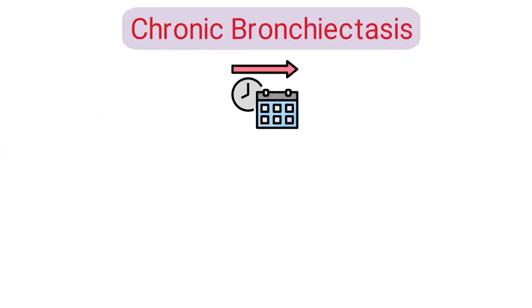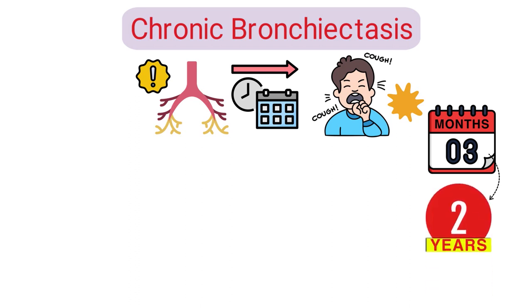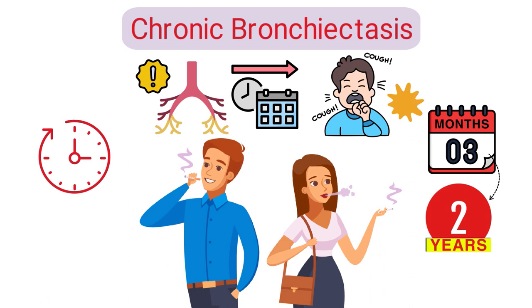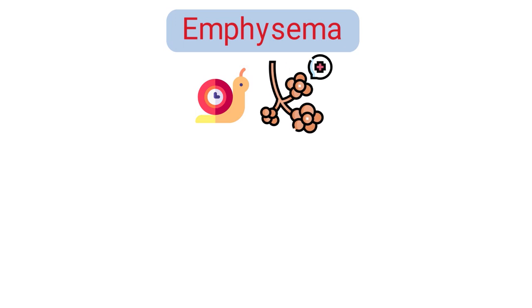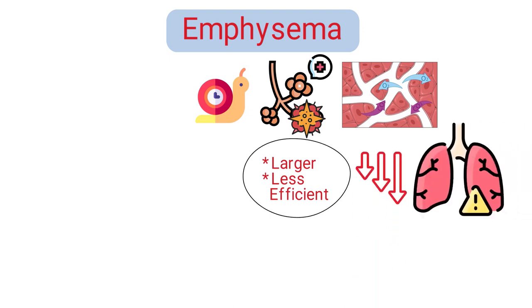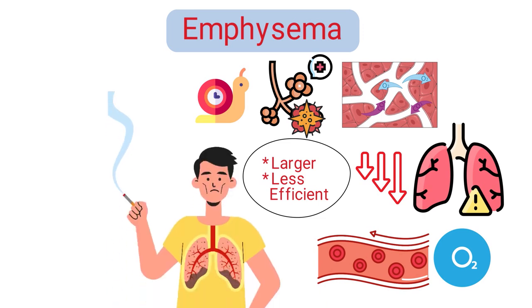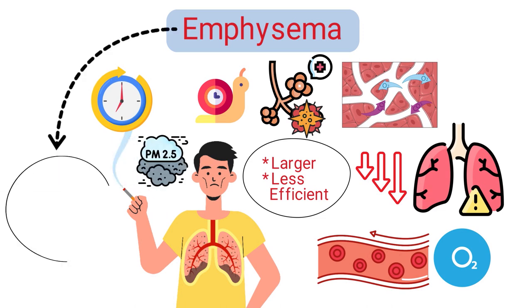Next up is chronic bronchitis, which involves long-term inflammation to the bronchi, the major air passages to the lungs. It's characterized by a persistent cough that produces mucus for at least three months in consecutive years. The primary cause is smoking, but prolonged exposure to air pollutants and dust can also contribute. Then we have emphysema, which involves the gradual destruction of the alveoli — the tiny air sacs in the lungs where oxygen exchange occurs. This destruction leads to the formation of larger, less efficient airspaces, reducing the lungs' capacity to transfer oxygen into the bloodstream. The primary cause is smoking, but long-term exposure to airborne irritants can also contribute. Emphysema is often grouped under the COPD umbrella, along with chronic bronchitis.